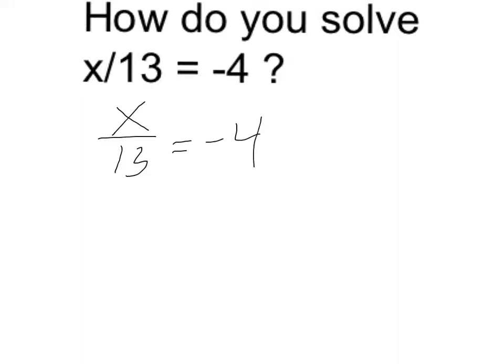I want to multiply each side by 13, because multiplying by 13 is going to have the effect of canceling out that denominator.